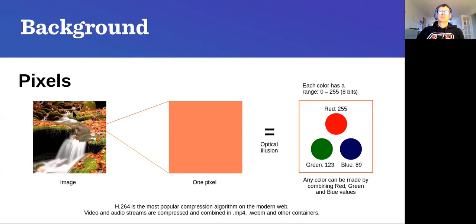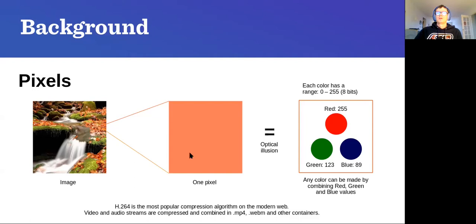Videos and raster images consist of pixels. Each pixel is like a small square with a color — when many of these are scaled down and placed next to each other, our brain creates an optical illusion and we perceive an image. One pixel is represented by three values: red, green, and blue — corresponding to the three elements on a computer monitor. In old CRT monitors these would be three separate LEDs for each pixel.